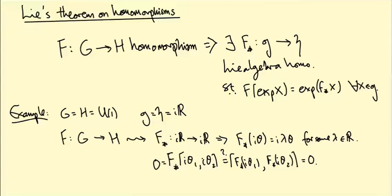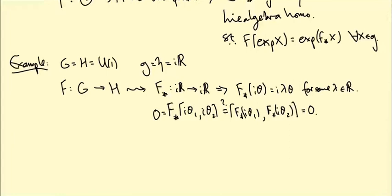Any linear map here is a Lie algebra homomorphism. So we're saying any homomorphism from U(1) to U(1), any smooth homomorphism, is of the form F of e to the i theta equals e to the i lambda theta for some lambda in R. But which lambdas can occur?